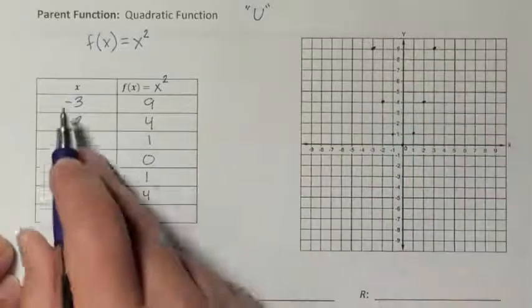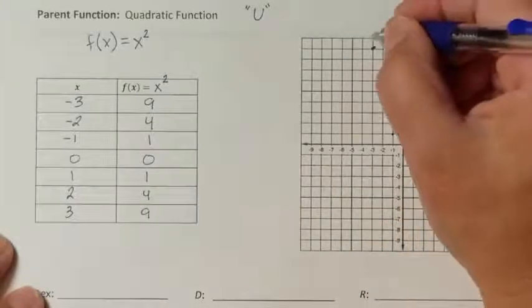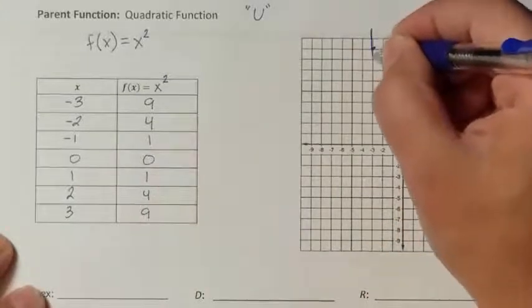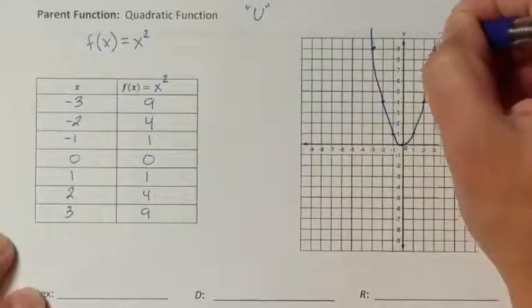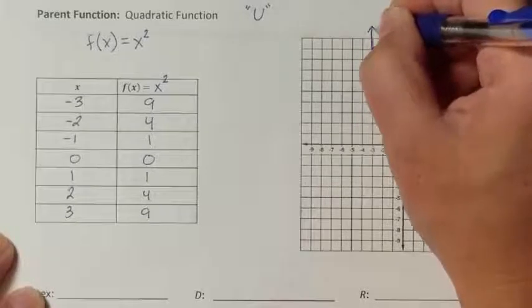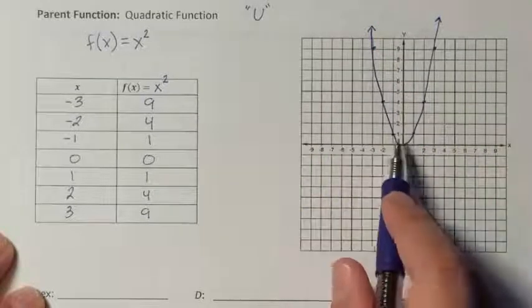So I just finished graphing all of the coordinate points in the x, y table. Now I need to connect it. It's a U, which means you need to connect it with smooth curved lines. We're not doing any of these pointed rocket ships. It is not a V. So that's as curved a U as I possibly can get.